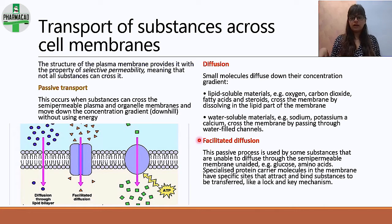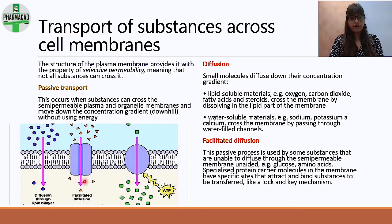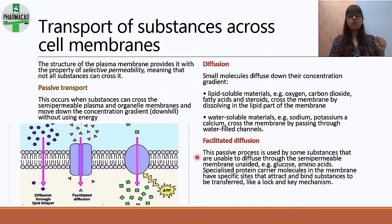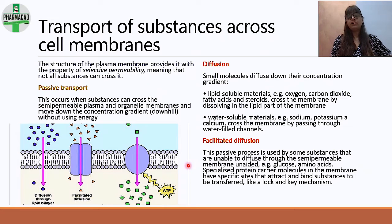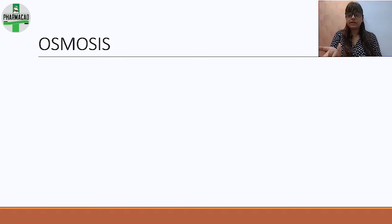Facilitated diffusion is a passive process used by substances unable to diffuse through the semi-permeable membrane unaided — they need a little help, like a facilitated admission with perception. Examples include glucose and amino acids, which use specialized protein carrier molecules. The key point: facilitated diffusion does not require ATP — it is still passive, just with facilitation.